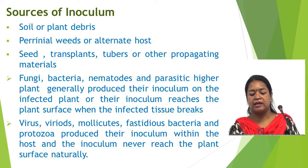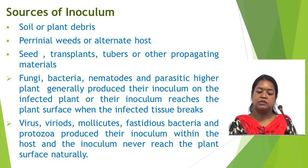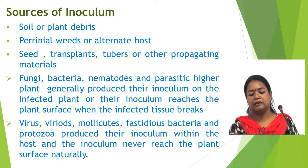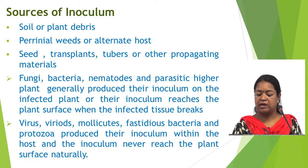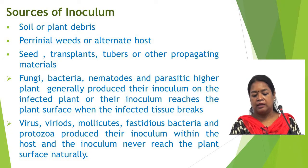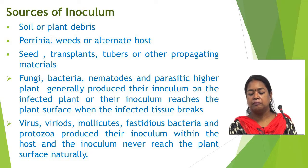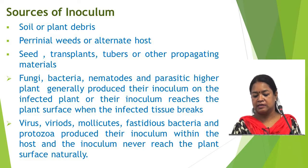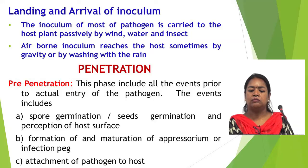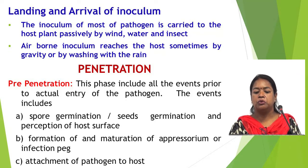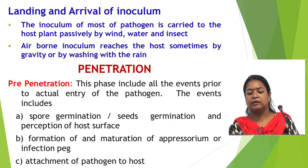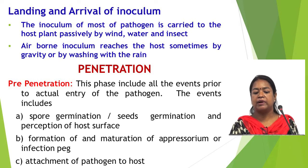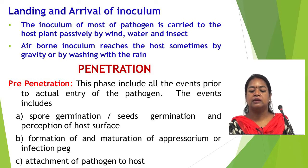In the case of viruses, viroids, mollicutes, fastidious bacteria and protozoa, they produce their inoculum within the host and the inoculum never reaches the plant surface naturally — they require some destruction, breaking, or a pore to enter the host surface. The inoculum of most pathogens is carried to the host plant by wind, water, and insects. Some airborne inoculum reaches the host by gravity or by washing with rain.